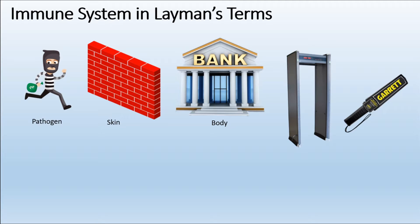We have different glands, hair-like projections known as cilia, and a sticky substance called mucus. All these things protect our nasal cavity and breathing passageway so that pathogens can't cross them. Mucus and cilia try to stop, slow down, and eventually trap the pathogen — which is why I compared them to the metal detectors at the bank entrance.